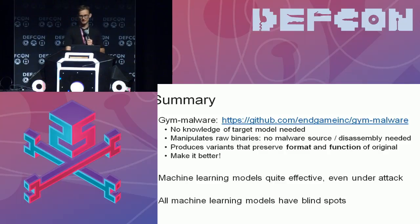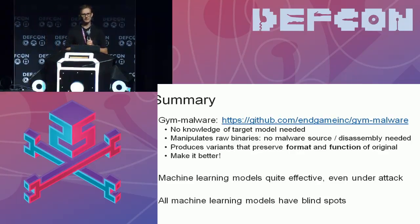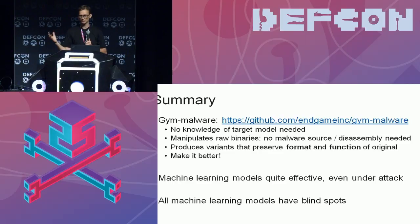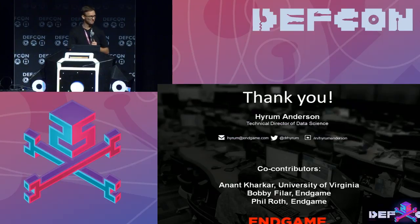The summary: you can go to GitHub gym-malware and try this game for yourself. No knowledge of the target model is needed. It will manipulate raw binaries and produce new binaries that this world has never seen, some fraction of which may evade your machine learning model. We use these things at Endgame to help harden our models. Stepping back, it turns out that machine learning is actually fairly robust — even under direct attack, the models warded off most of these attacks. Nevertheless, all models have blind spots, so don't buy in to the hype. Thank you.